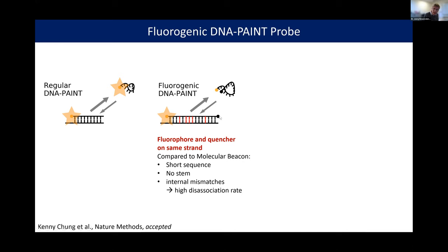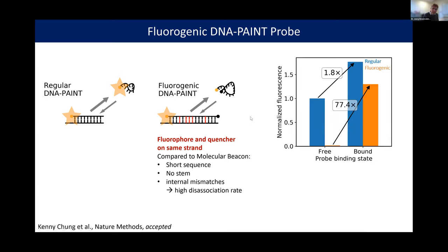To separate the quencher far enough from the fluorophore yet achieve only transient binding, we engineered internal mismatches in the sequence to get a high dissociation rate with a nicely separated distance between fluorophore and quencher. Testing this in bulk solution, the regular DNA-PAINT has a very moderate fluorogenic effect of about 1.8-fold between free and bound probe, while this fluorogenic DNA-PAINT probe has nearly an 80-fold increase in fluorescence upon binding, reaching levels nearly as high as those seen in regular DNA-PAINT probes.